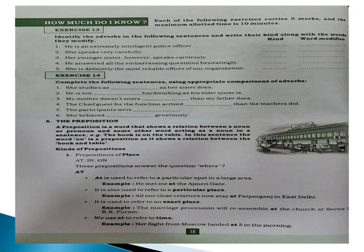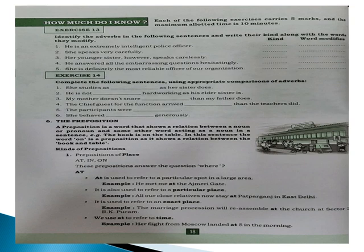On page number 18, Exercise 13 is given. We will complete the first sentence; the rest you have to do, and I will give you a note to check your answers. First sentence: 'He is an extremely intelligent police officer.' Here 'extremely' is an adverb that modifies the adjective 'intelligent', indicating the degree — how much intelligent — that is, extremely intelligent.